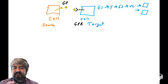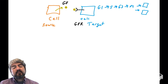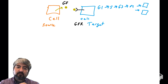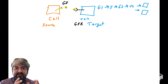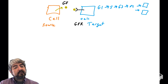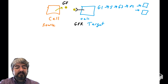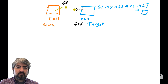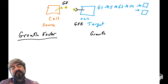This is generally how it works: some cell is the source of the growth factor, it binds a growth factor receptor on the target cell, and the target cell will go through the cell cycle and make more cells. Now we should learn about some specific growth factors and growth factor receptors.